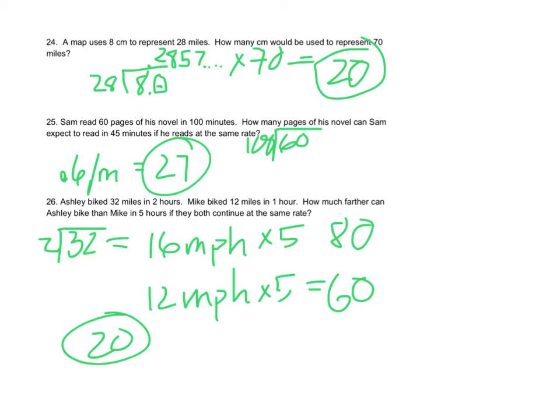Ashley biked 32 miles in 2 hours. If we divide 32 by 2, she's going 16 miles per hour. Mike bikes 12 miles an hour. We're going to multiply each by 5. Ashley biked 80 miles in 5 hours, and Mike bikes 60 miles in 5 hours. That's a difference of 20. How much farther can Ashley bike than Mike? It's 20 miles.